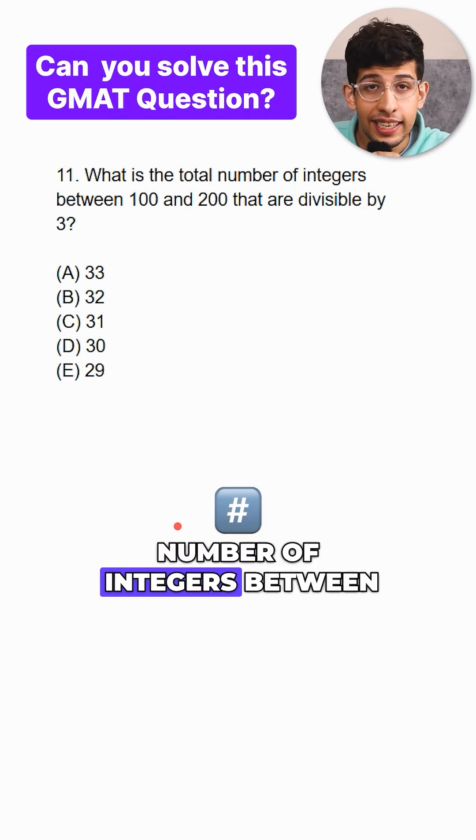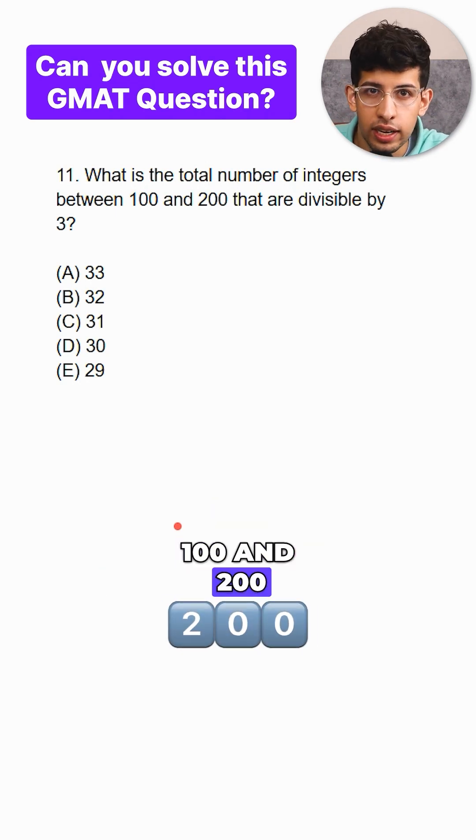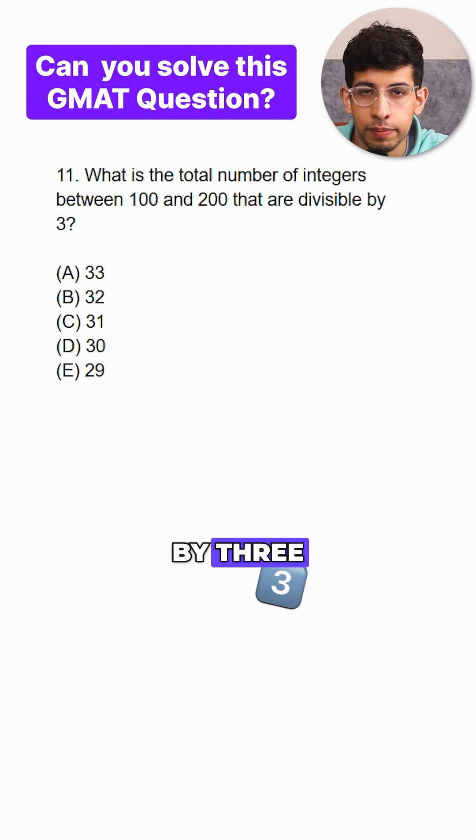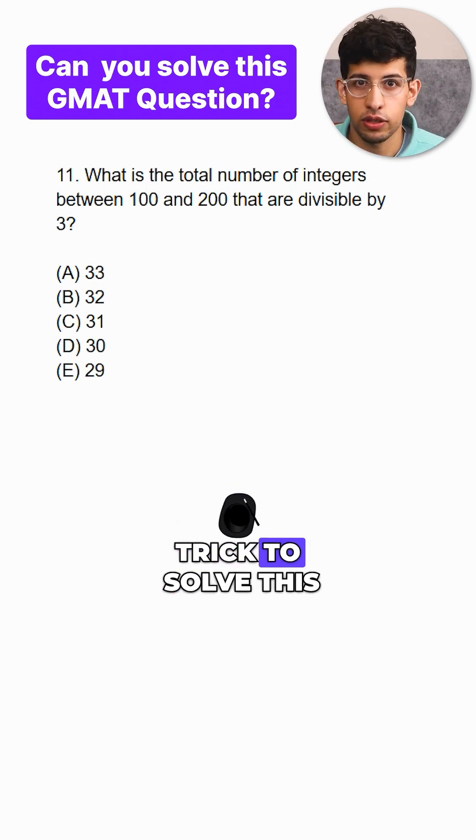What is the total number of integers between 100 and 200 which are divisible by 3? There is a simple trick to solve this.